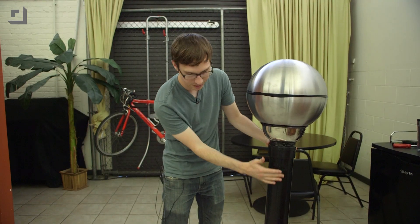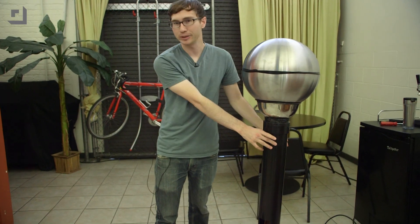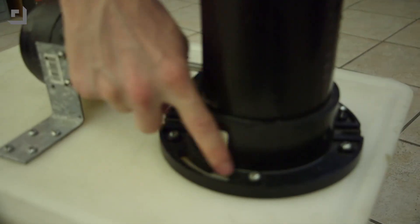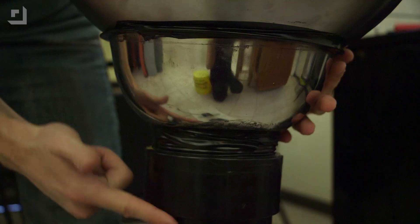Next up is just the base of the generator. This is just a big ABS pipe that has a couple of fittings on it. One to attach it to the board and one to make it so I can easily make fine adjustments to the bowls up here.